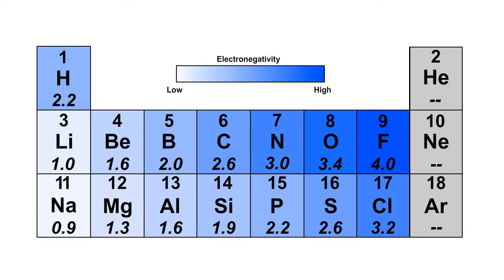The electronegativities of hydrogen and oxygen are very different. As you can see from the chart, the electronegativity of oxygen is higher than the electronegativity of hydrogen.